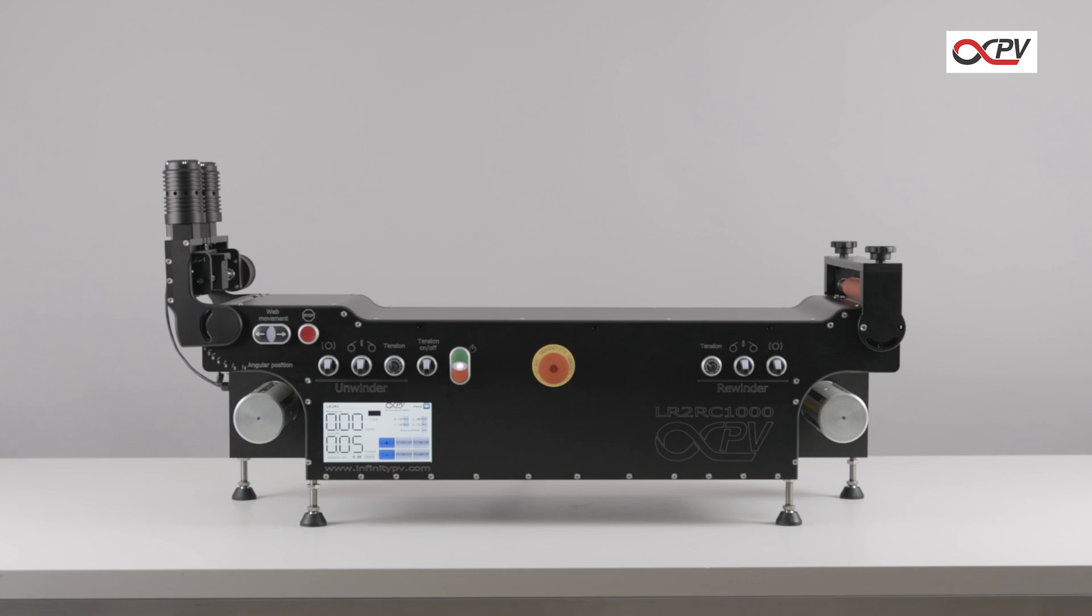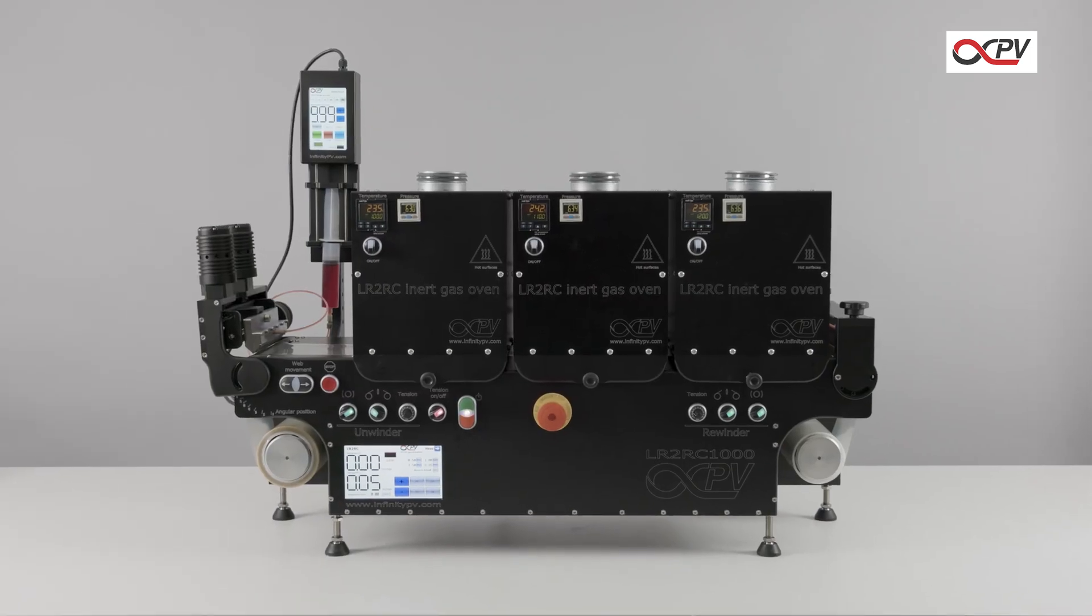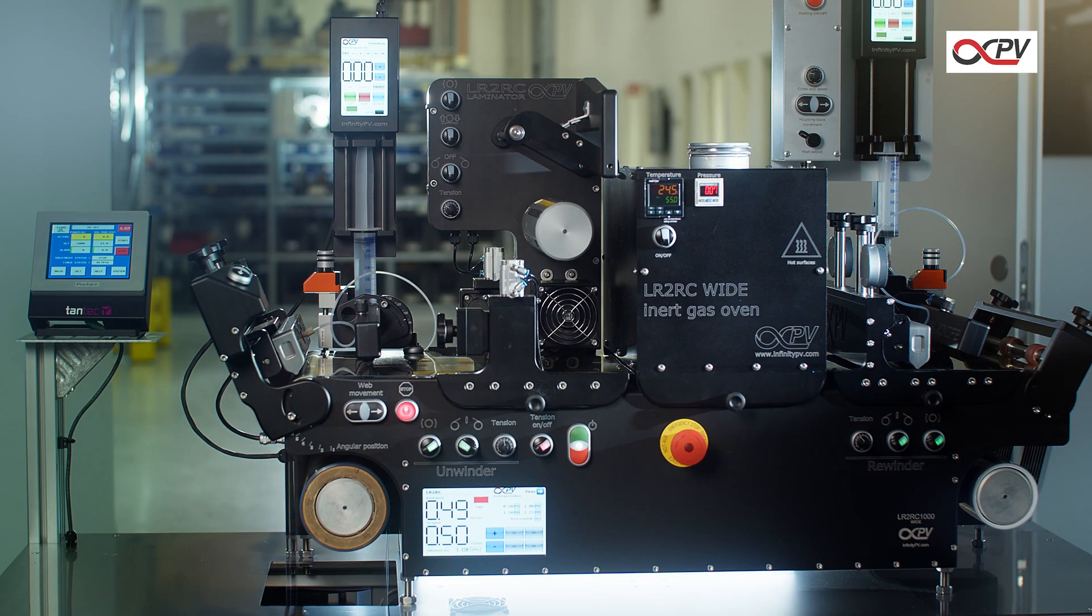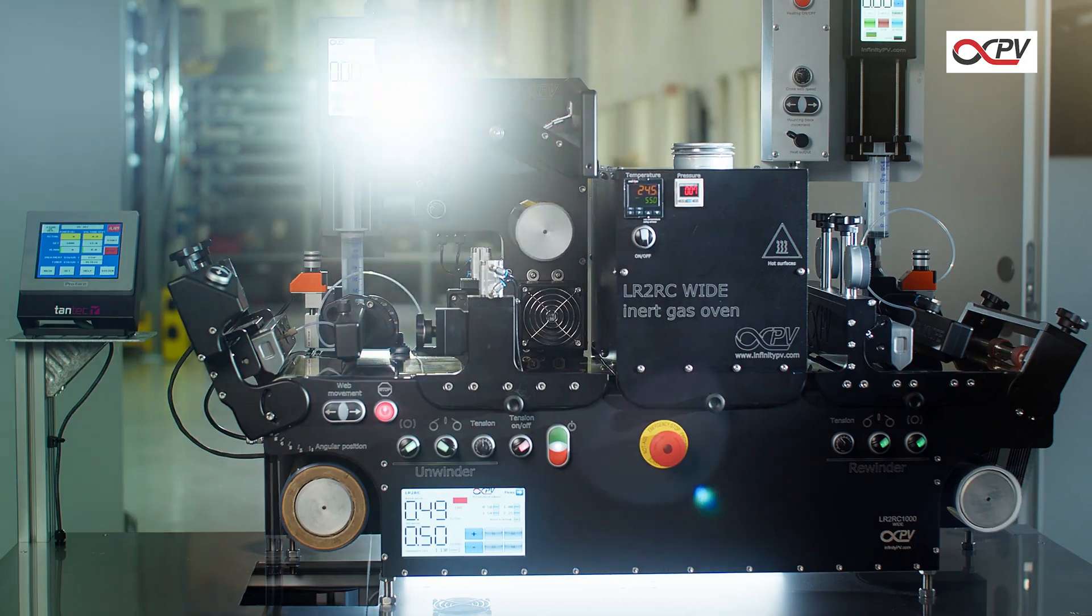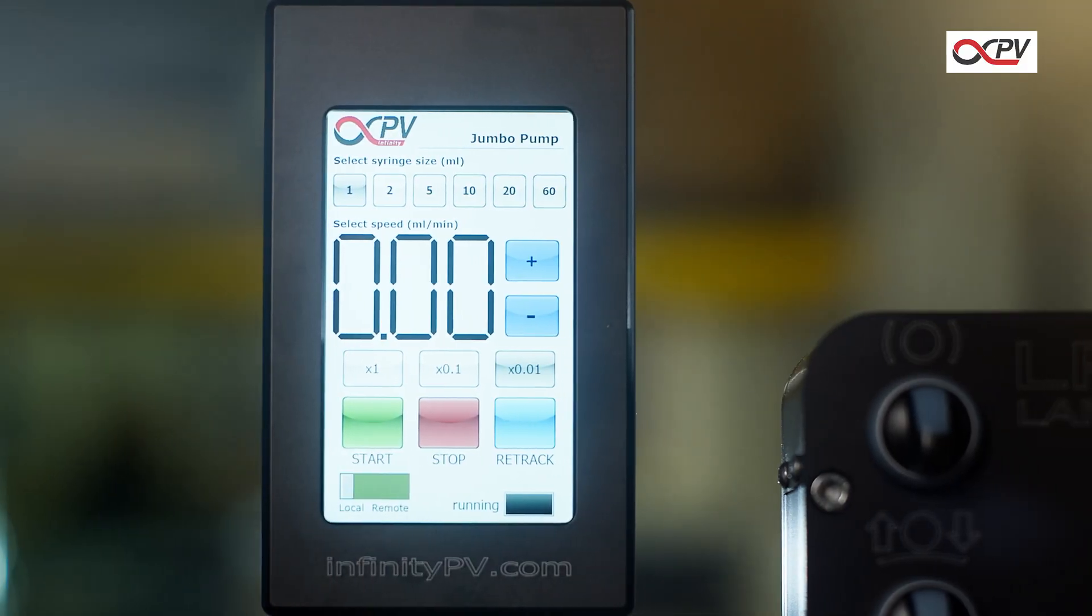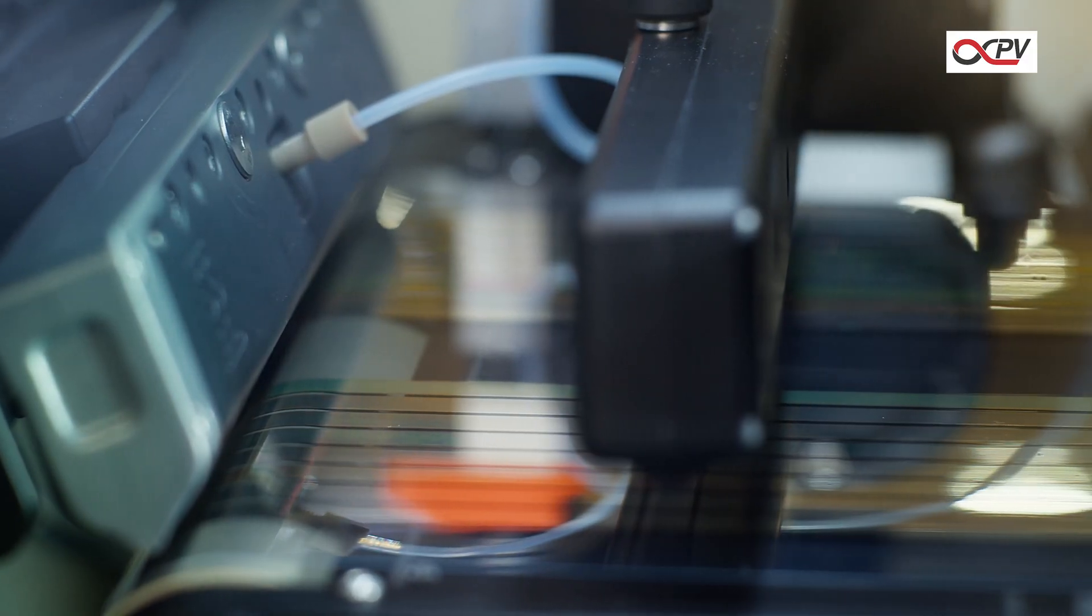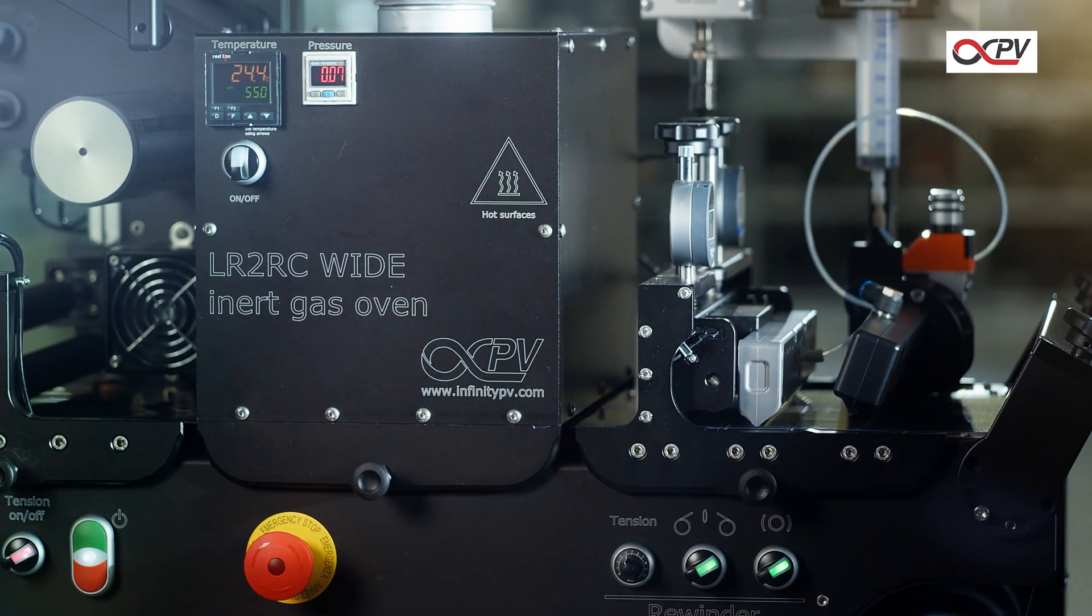As a part of the modular laboratory roll-to-roll coater platform, the slurry coater can be tailored to meet the specific needs of your process. Combine it with pumps, ovens, laminators, surface treatment, anti-static bars, or air knives.